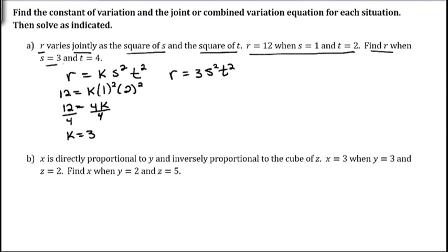Now we want to find R when S is 3 and T is 4. So we have 3 times 3 squared times 4 squared. 3 squared is 9, times 3 is 27, and 4 squared is 16, so we have 27 times 16. That gives us 432.